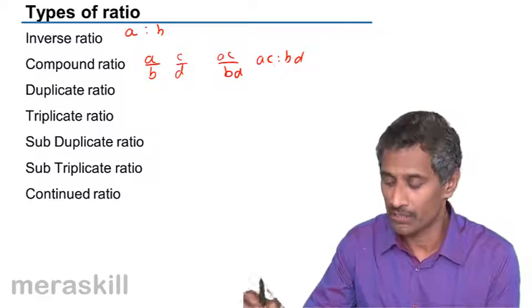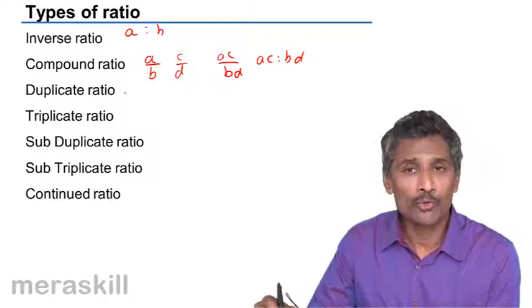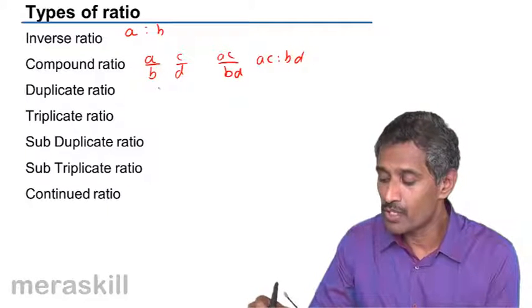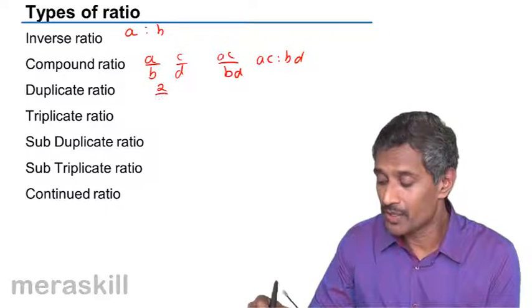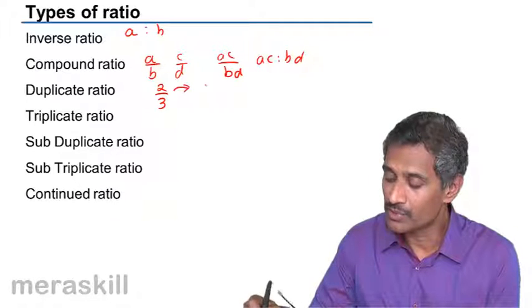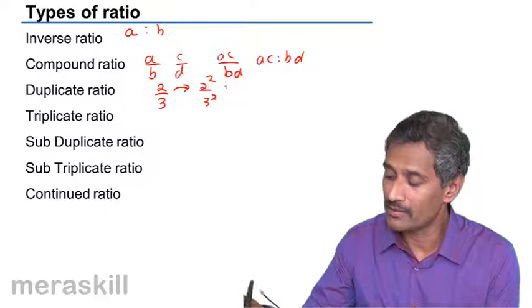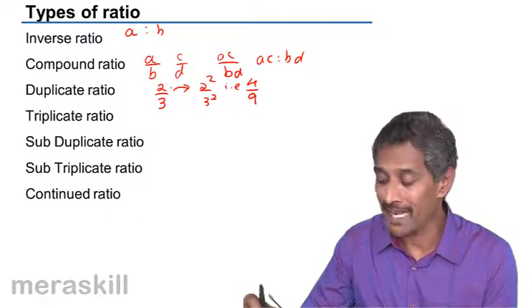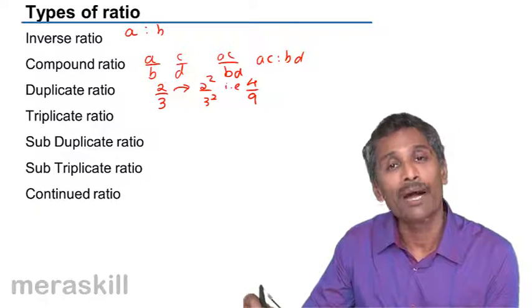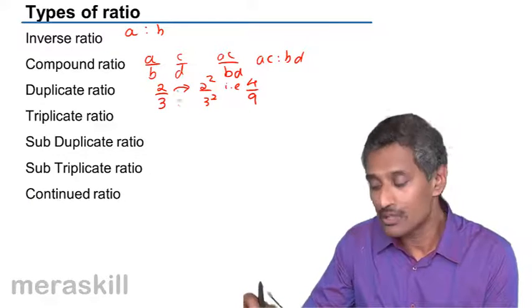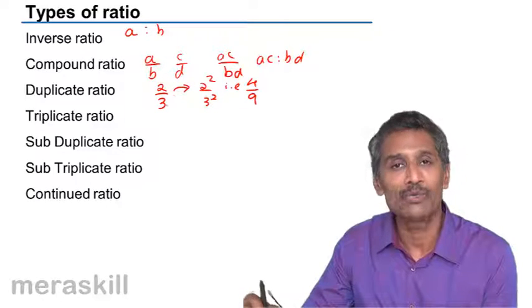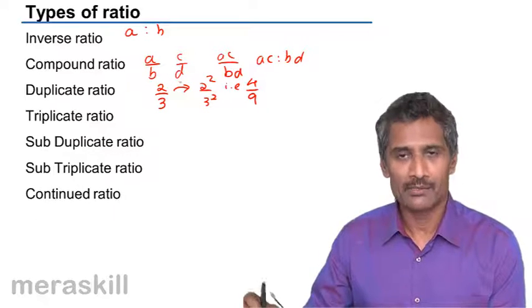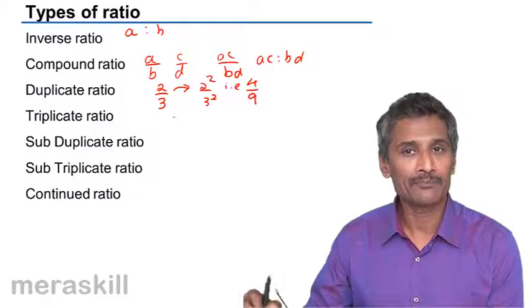Then we have duplicate ratio, which is obtained by multiplying the antecedent and consequent. If you take a ratio 2 by 3, its duplicate ratio is going to be 2 squared by 3 squared, that is 4 upon 9. This is the same as if you compound a ratio by itself - that is 2 by 3 into 2 by 3. You multiply 2 by 2 and 3 by 3, so you are practically compounding a ratio by itself once more and you get 4 by 9.